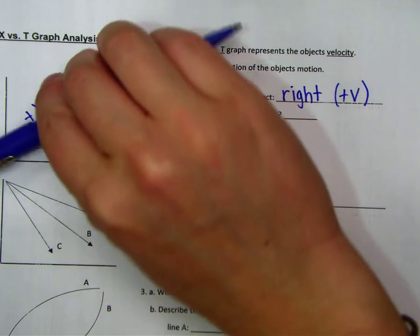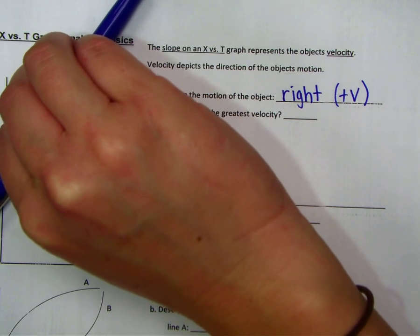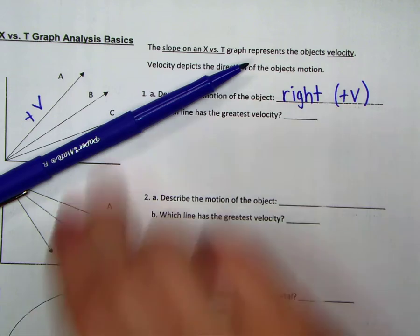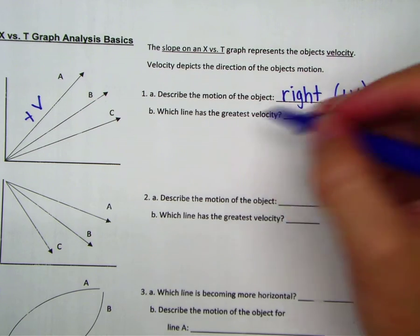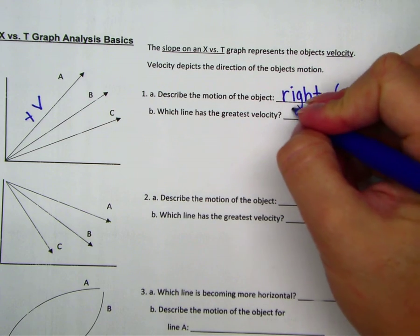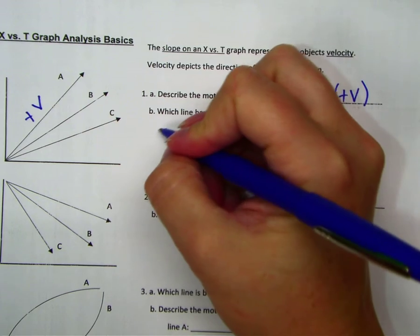If it is more vertical, then it's moving faster. If it's more horizontal, then it's moving slower. So the greatest velocity would be line A.